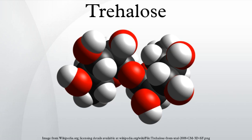Trehalose is a non-reducing sugar formed from two glucose units joined by a 1,1-alpha bond, giving it the name α-D-glucopyranosyl α-D-glucopyranoside. The bonding makes trehalose very resistant to acid hydrolysis, and therefore stable in solution at high temperatures, even under acidic conditions. Trehalose is less soluble than sucrose, except at high temperatures.